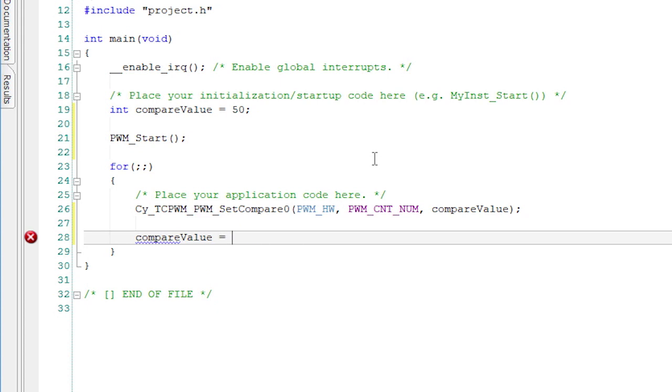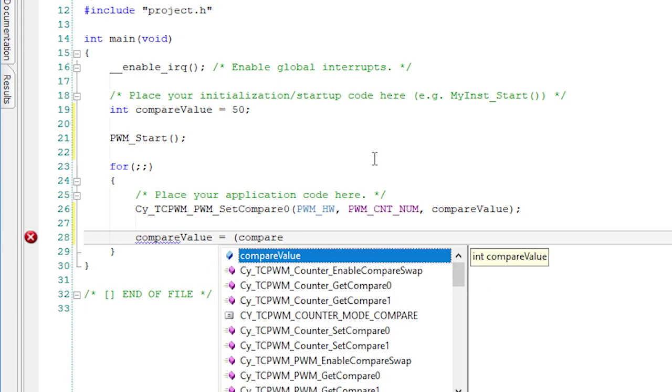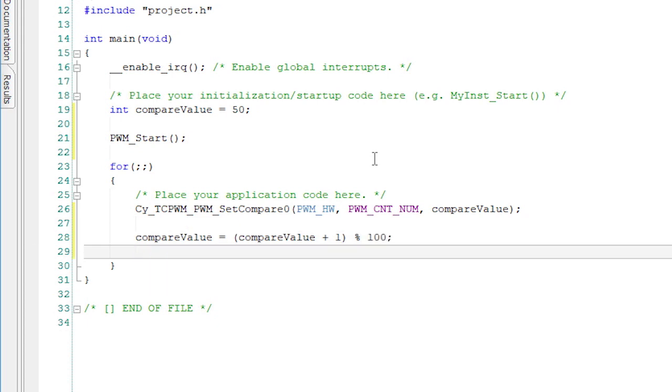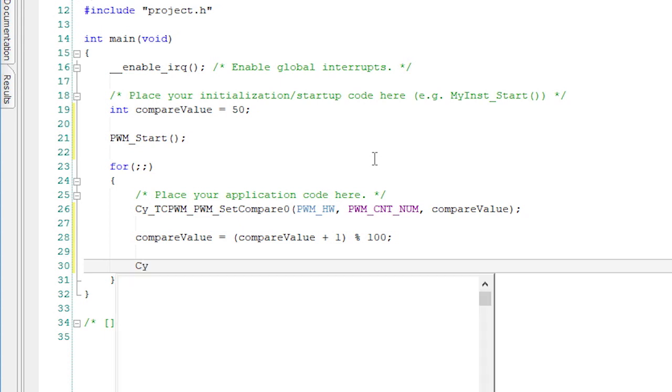I want to increment the local variable compare value by one and mod it by 100 so that it counts up to 100, the maximum period we set before, and then circles back around and resets to zero.